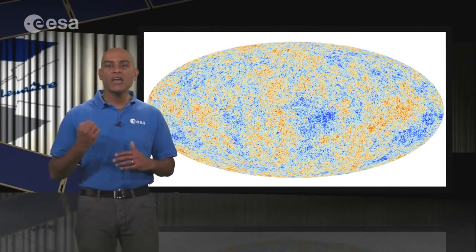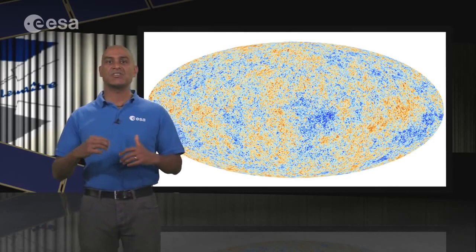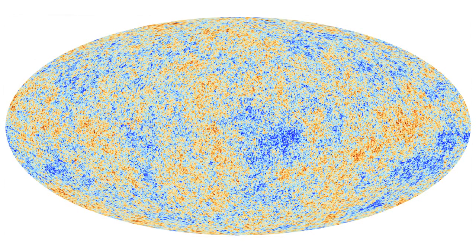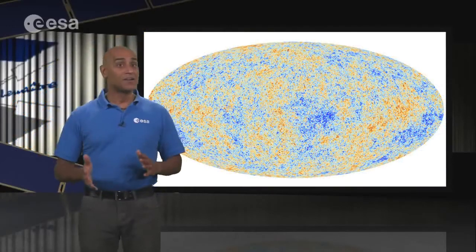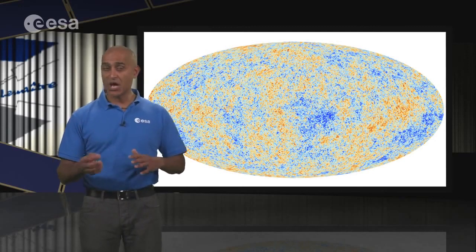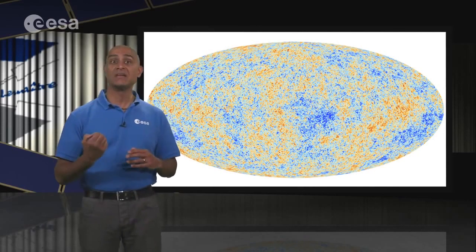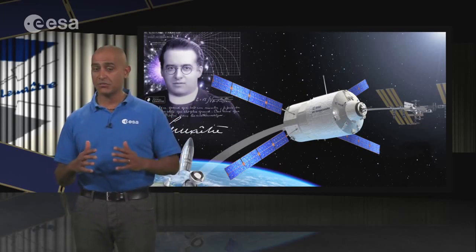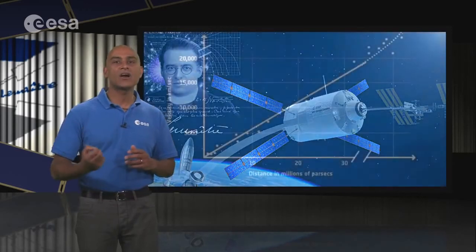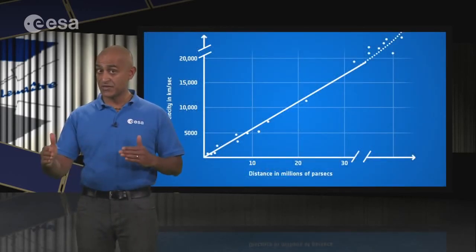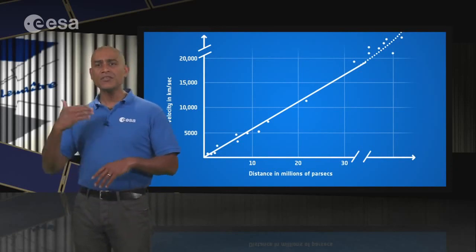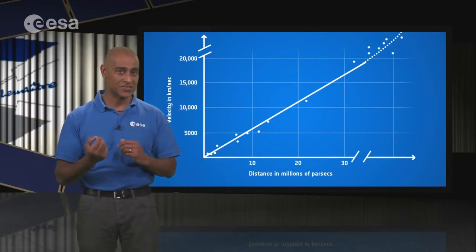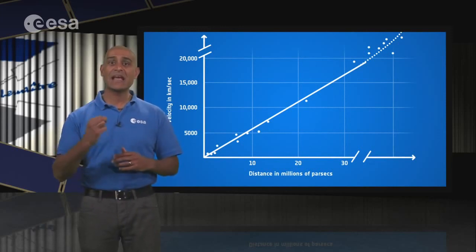This image shows the highest resolution map we currently have of the variations in the cosmic microwave background. It's a record of the time when the universe was only 380,000 years old. But, as is so often the case in science, as one mystery is solved, a new one emerges. Three decades after the discovery of the cosmic microwave background radiation, analysis of light from very high redshift galaxies, some of the furthest in the universe, seemed to suggest that, rather than slowing down, as might be expected due to the mutual gravitational attraction between galaxies, the expansion of the universe is actually accelerating.